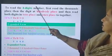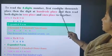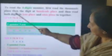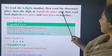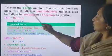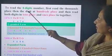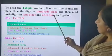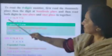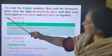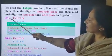To read a 4-digit number, first read the 1000's place, then the digit at 100's place, and then read both digits in 10's place and 1's place together. Now look at this number: 1476. We will write this number in a place value table.